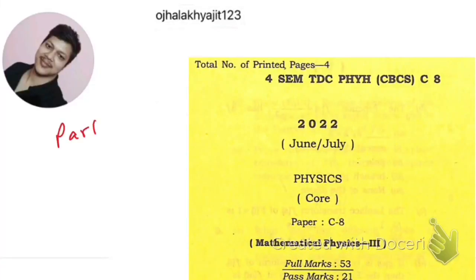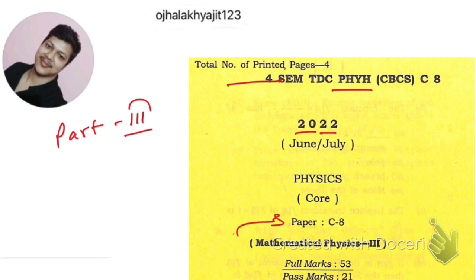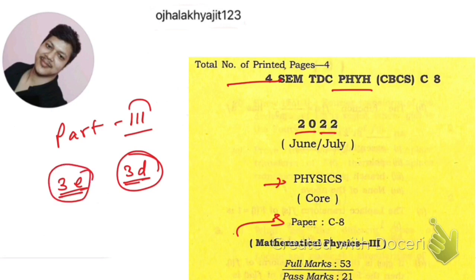Hello friends, this is Part 3 of the solution of Mathematical Physics paper C8 of fourth semester, De Brugger University Physics Honours 2022. In Part 2 we had solved up to question 3e, but I made a mistake in the calculation of 3d, so we're going to start from 3d again. Question 3 was already solved in an older video, so I had provided that link instead of solving it in Part 2.